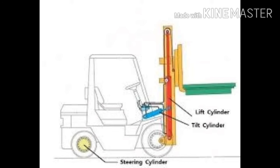The tilt cylinder is a double-acting hydraulic cylinder, meaning it can both push and pull its load. Generally there are two tilt cylinders on the forklift, connecting the left and right stationary rails of the upright assembly to the frame.